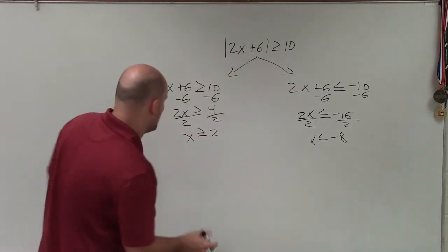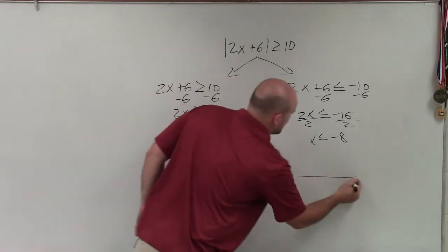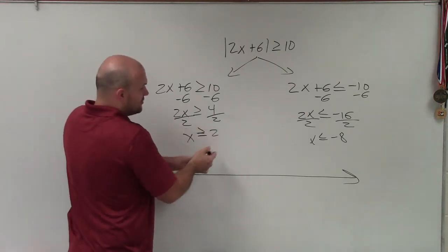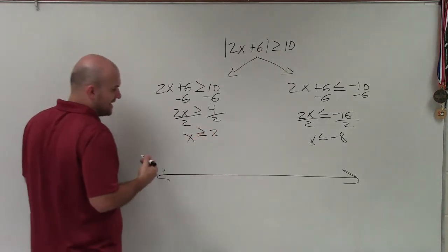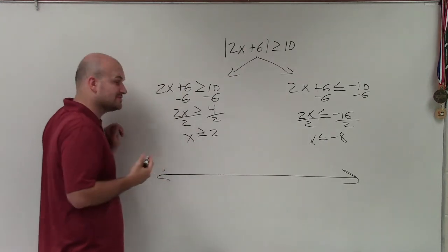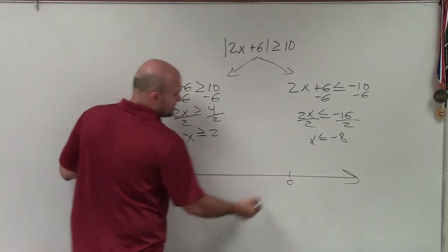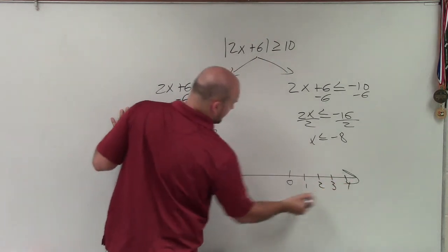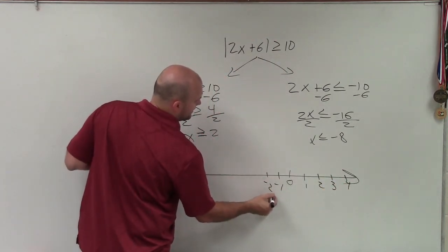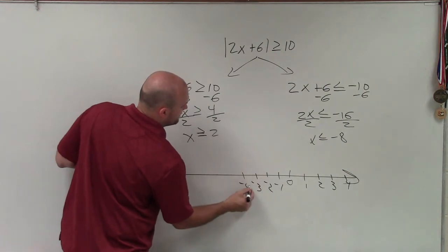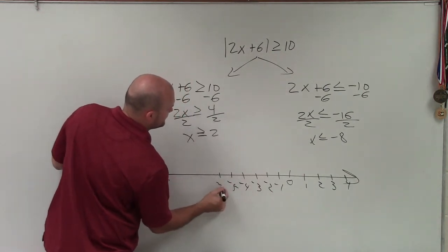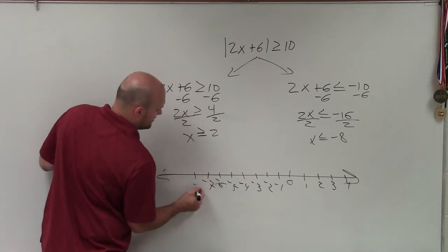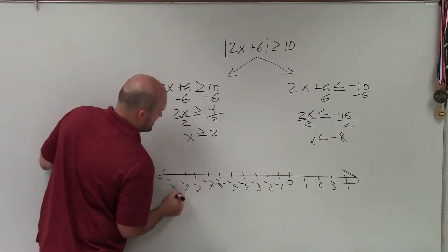So now, to go ahead and graph this, I see that x is greater than or equal to 2 and x is less than or equal to negative 8. So I want to make sure both of those values are included on my number line. So I'll start 0 here, I'll have 1, 2, 3, 4. Then I'll do negative 1, negative 2, through negative 10 on the number line.